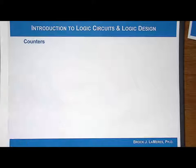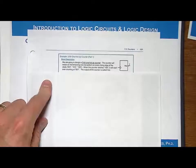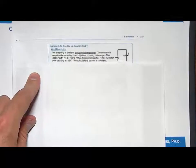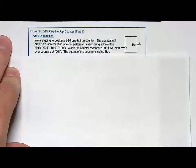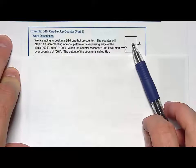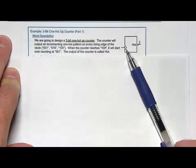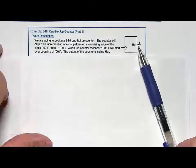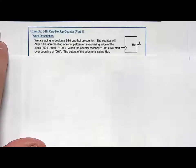Let's take a look at how we're going to design this. We're going to use a similar approach to the synthesis of this, so let's walk through it from beginning to end and start by looking at the block diagram. We'll have an output that we call 'hot' with three bits, and no inputs. Whenever we clock this, it'll simply just walk through. So that's the block diagram and the word description.